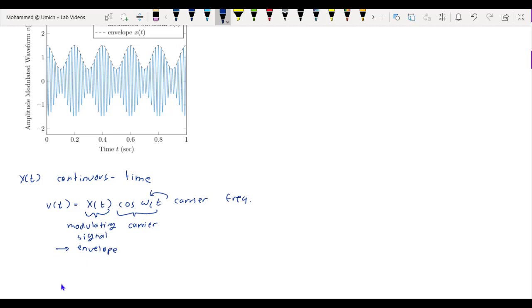So as an example, let's look at the signal v(t) equals (1 + 0.5 cos(2π·5t)) times cos(2π·50t).